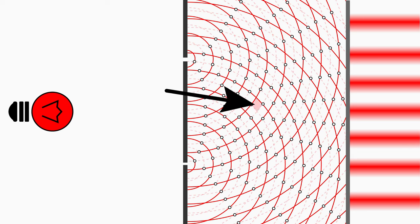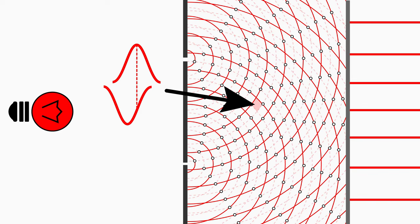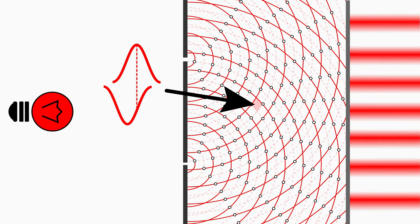And everything in between is partial interference. There is partly cancellation and partly amplification. That's why you don't see any sharp lines on the screen, but rather, the bright fringes merge evenly into dark fringes.